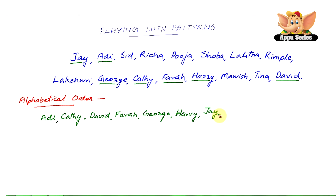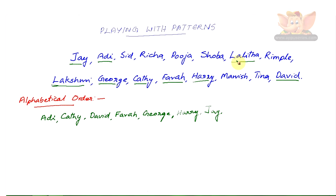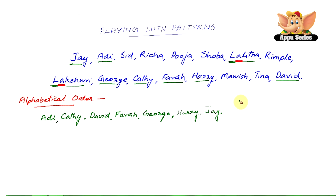Here we now have two names with L. So what do we do? Let's see which one should come first. We look at the second letter in both names — they are also both the same: A. So now we have to look at the third letter. The third letter is K in Lakshmi and L in Lalitha. In the English alphabet, K comes before L, so Lakshmi comes first, and then Lalitha.